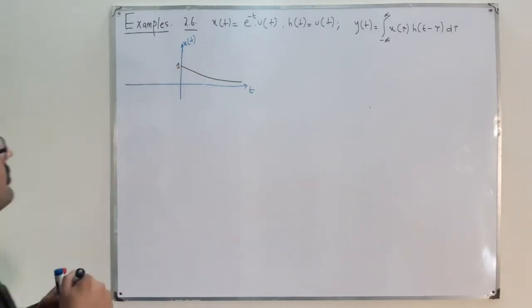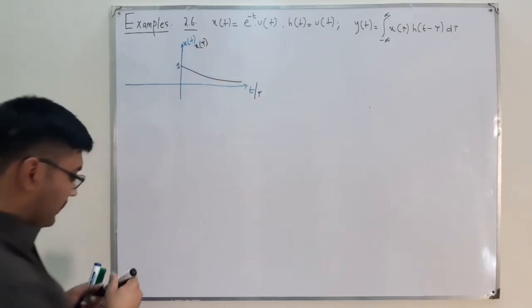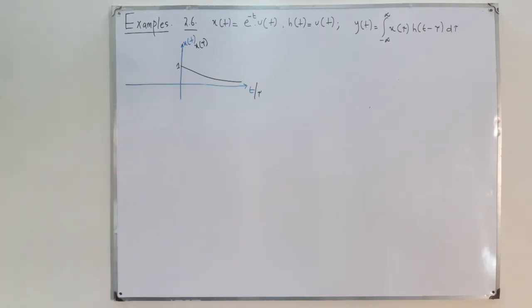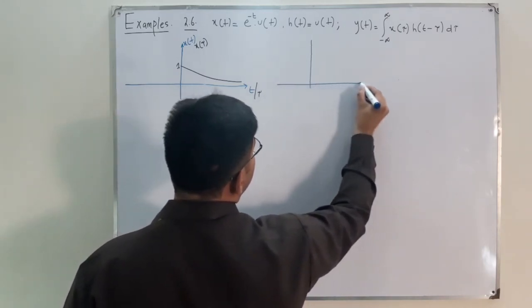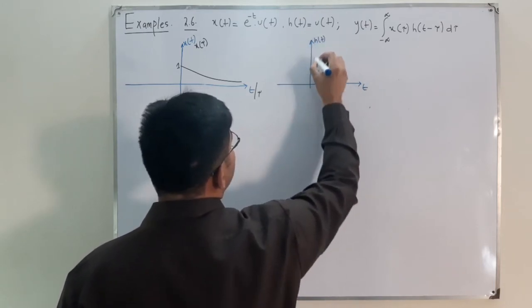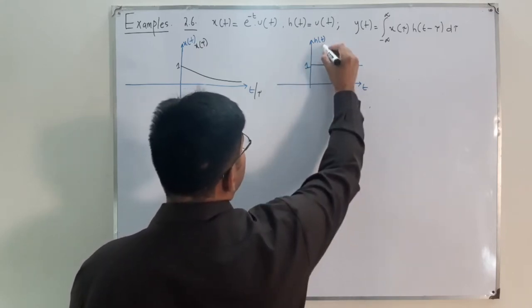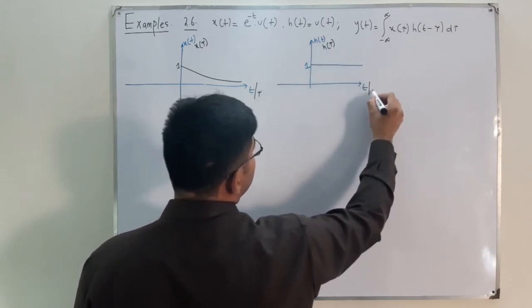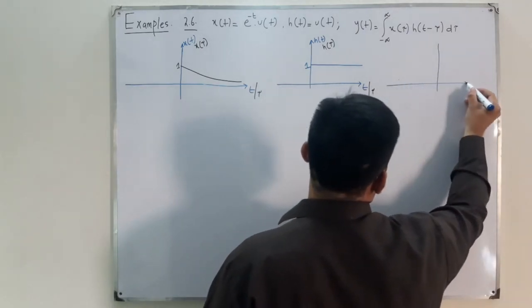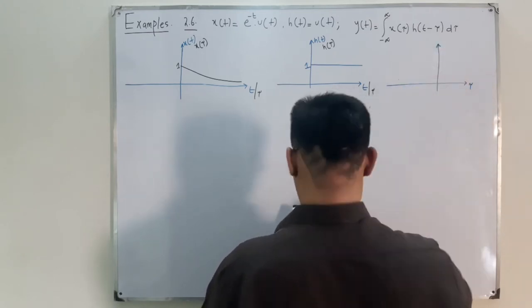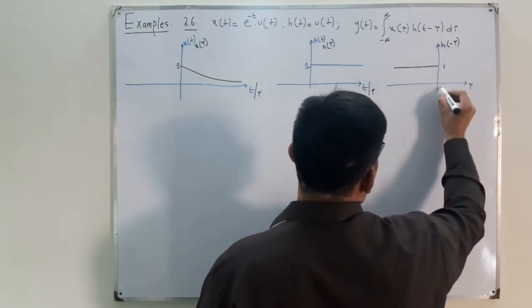We flip h(τ) to get h(-τ), which equals 1 for τ ≤ 0 — a time reversal about the y-axis. Then for h(t - τ), depending on the value of t: if t < 0, the shifted step extends from -∞ up to τ = t, which is negative. We then look at the product of x(τ) and h(t - τ).